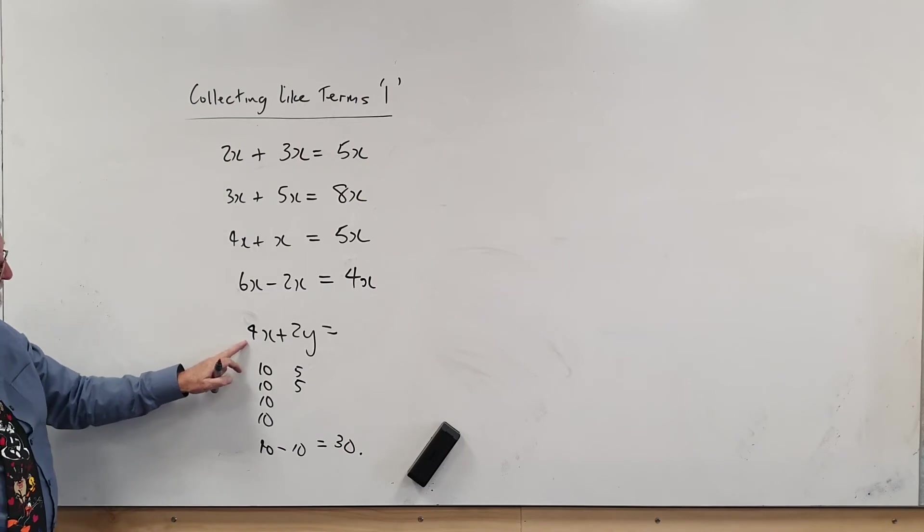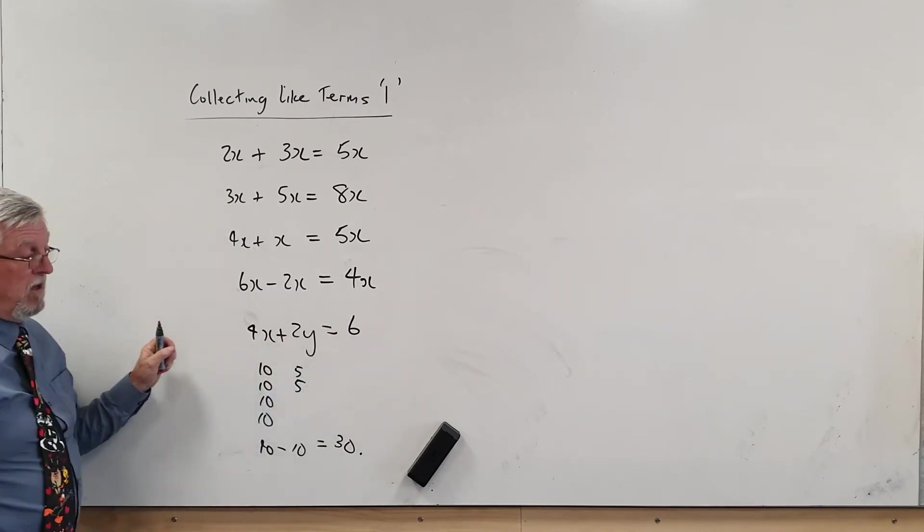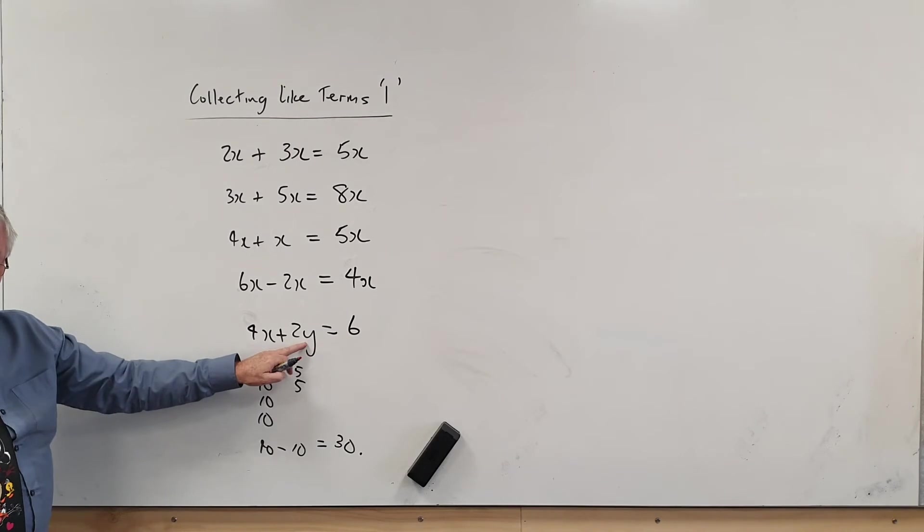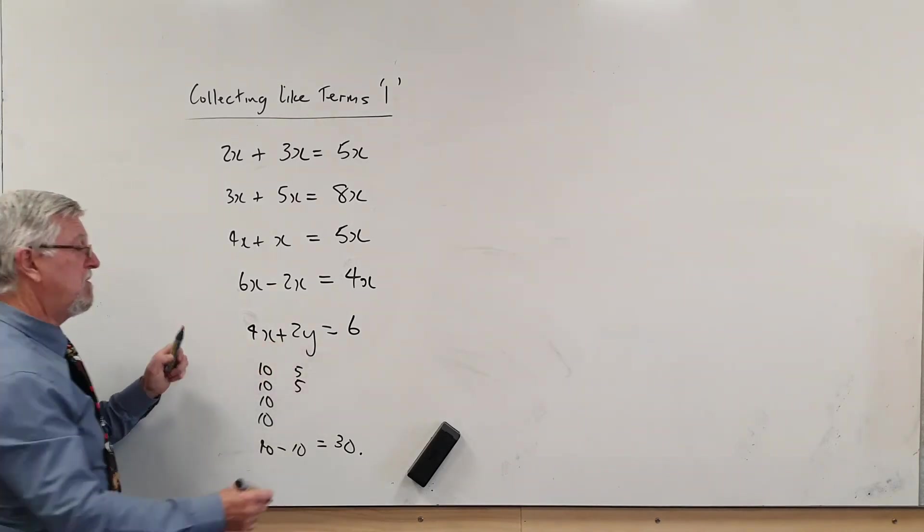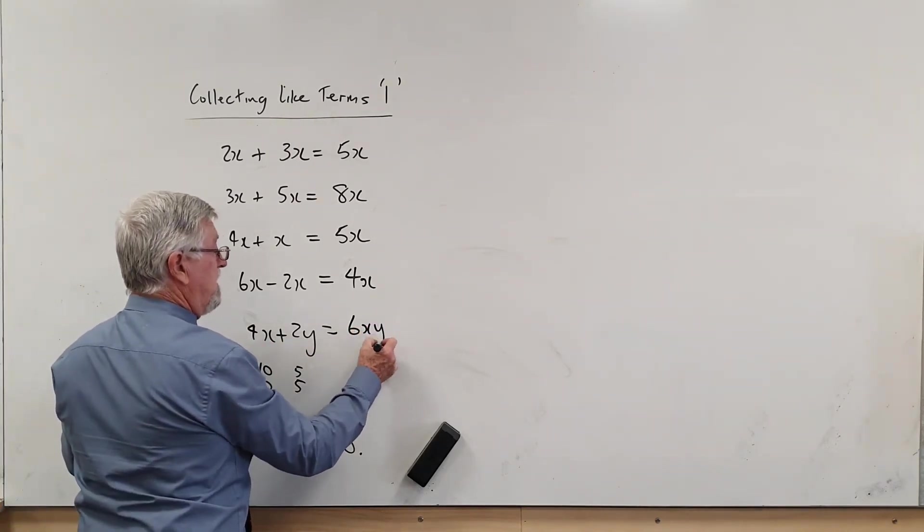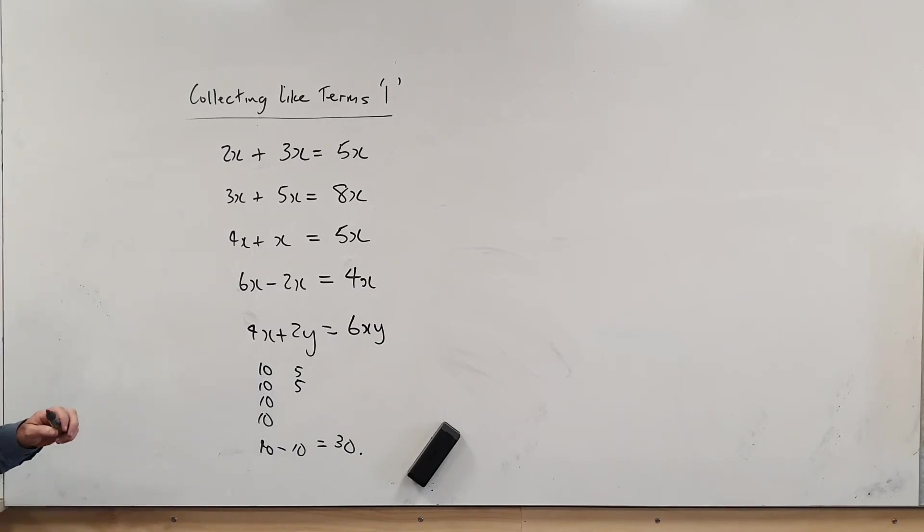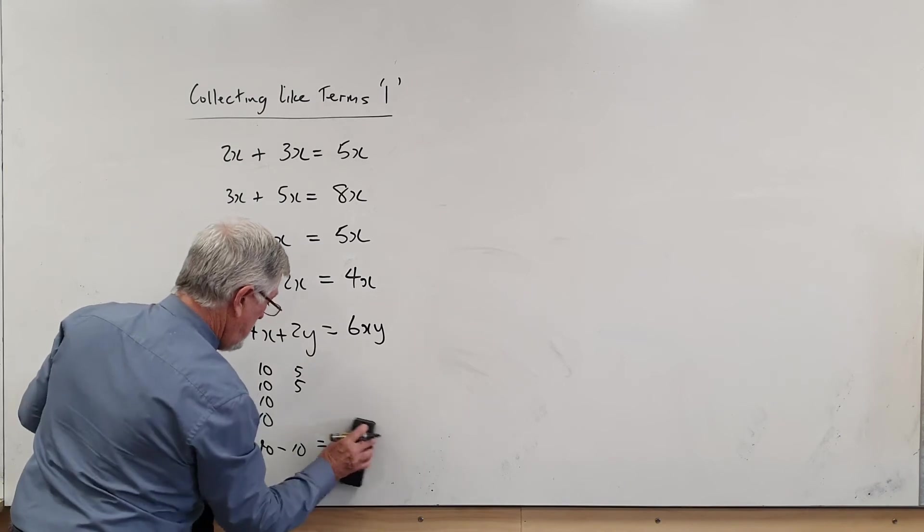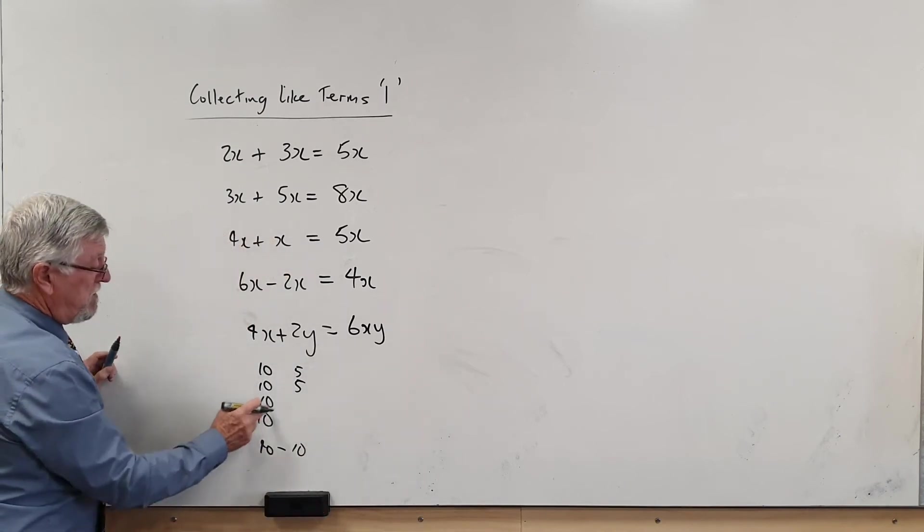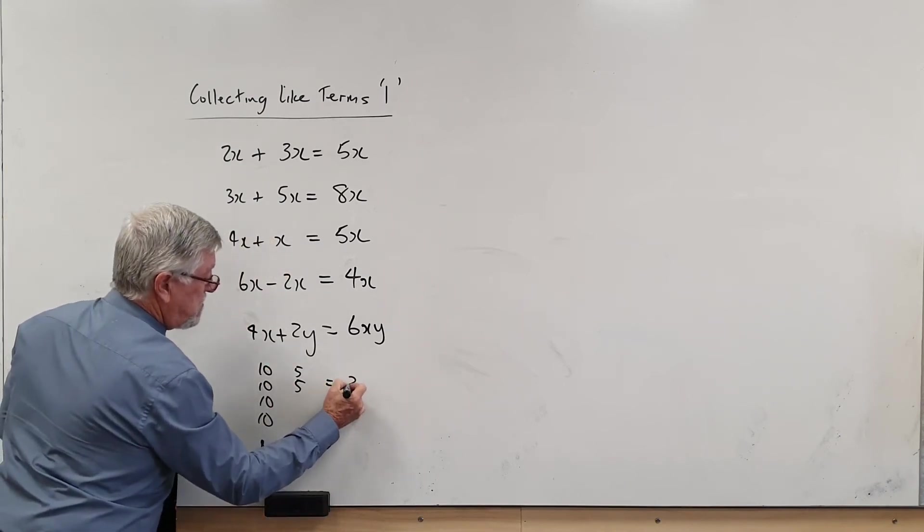Now if I went four plus two is six, what would I do with the X and the Y? What does that become? I can do all sorts of weird things—I can make it XY, I can make it X plus Y. These are different amounts and they're different sizes, so I can't come across here and go, 'four of those take two of those is two.'